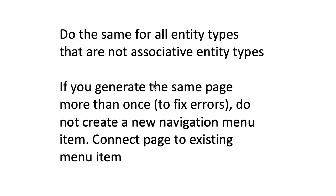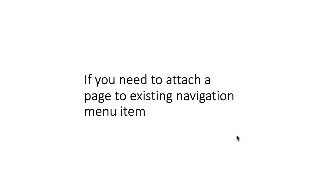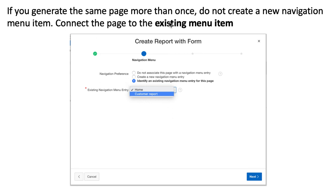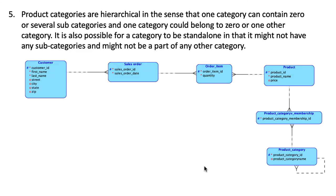If for any reason you have to generate the same page more than once — for example, if something went wrong with customers and you want to regenerate it — do not create a new navigation entry, because the first time you already created the navigation menu item. Instead, connect the new page to the existing item. When you get to that part while creating the page, instead of saying create a new navigation item, select identify an existing one to connect to, and select the old one.